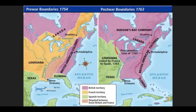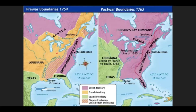By 1763, the British were now the world's greatest colonial power. The Seven Years War in Europe is called the French and Indian War in American history. On this map, the pink/rose color shows what Britain controlled, green is Spain and Louisiana, and gold shows former French territory.